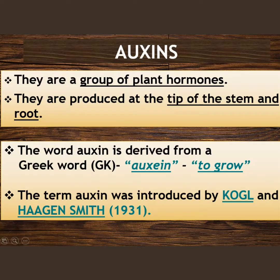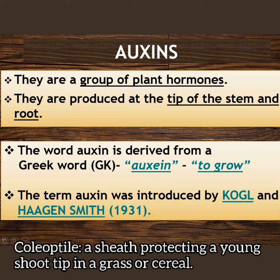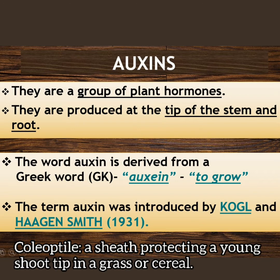Now we talk about auxins. Auxins are a group of plant hormones. They are produced at the tip of the stem and root. The word auxin is derived from a Greek word meaning 'to grow.' The term auxin was introduced by Kögl and Haagen-Smit in the year 1931.